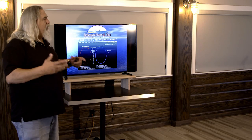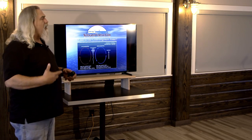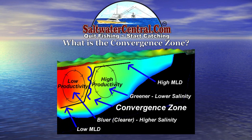We want to use all this satellite data to find the symptoms. On the nutrient-rich side the water is going to be greener and have lower salinity. On the warm side it's going to be bluer — that clear water — and it's going to be higher salinity.